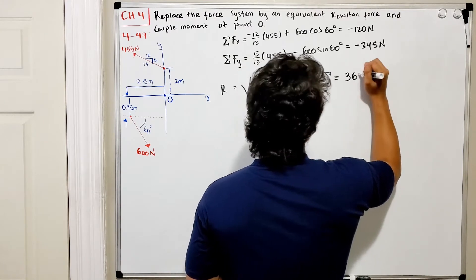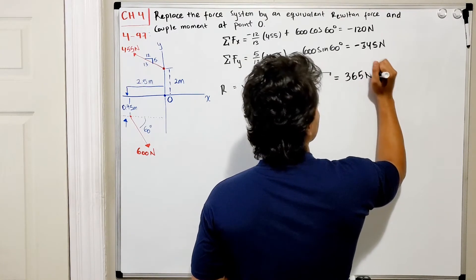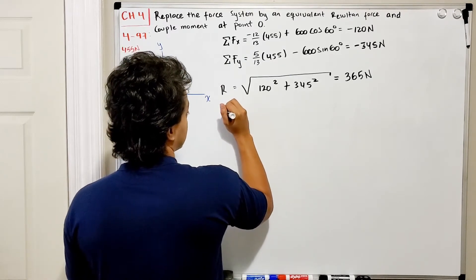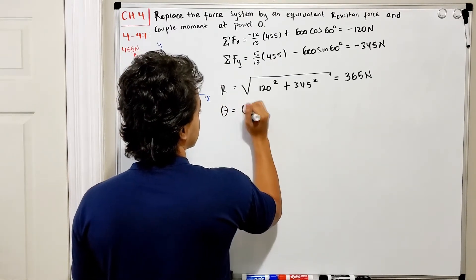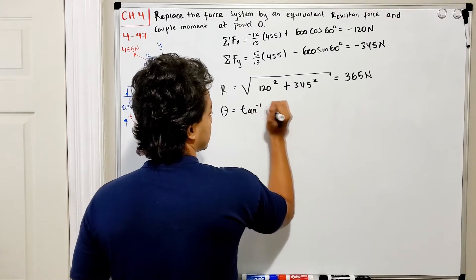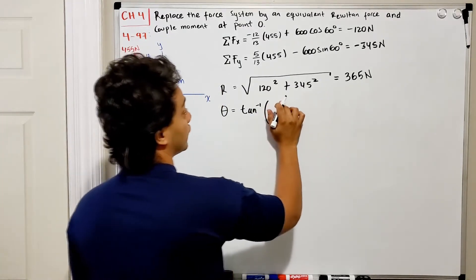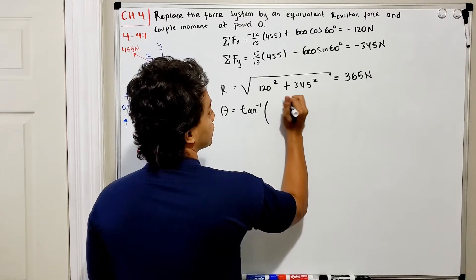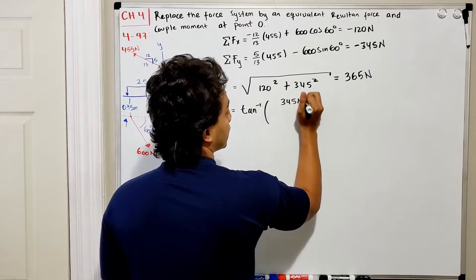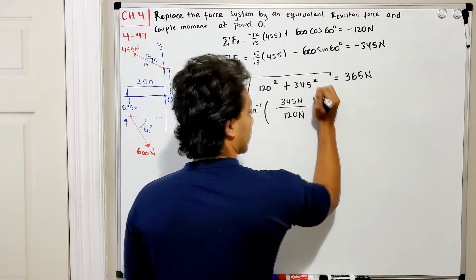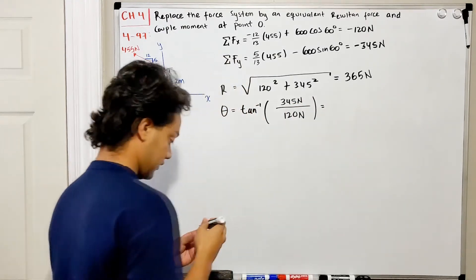The magnitude equals 365 N. Now what's the direction? Direction theta equals the inverse tangent of opposite over adjacent. The opposite is the Y component, 345 N, divided by 120 N.